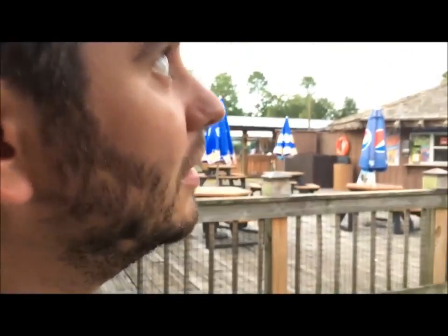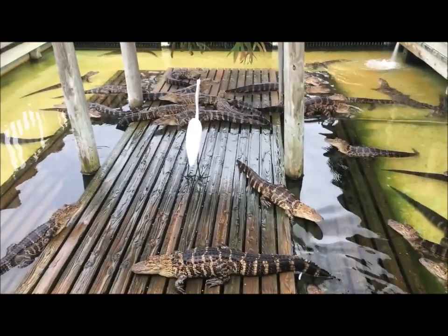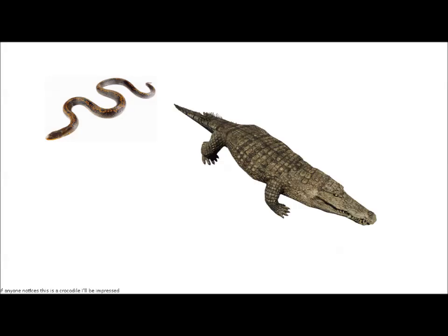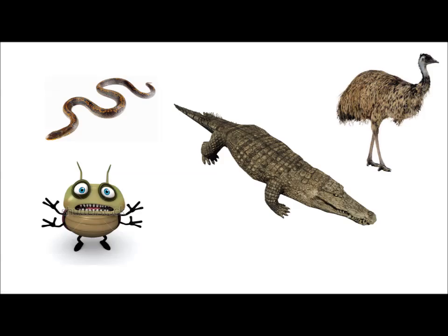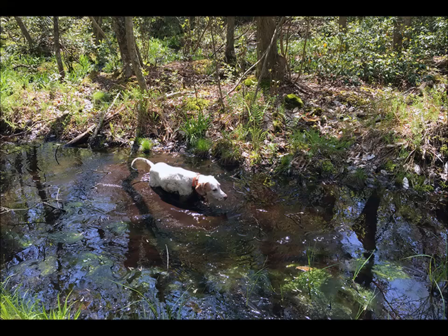Swamps, with their high biodiversity, can host a multitude of animals, aquatic and terrestrial. Usually we associate animals like snakes, alligators, bugs, and large birds with this biome, but mammals and large predators can move into the swamp too.